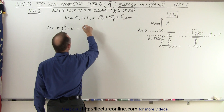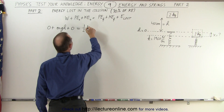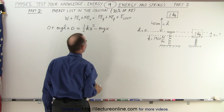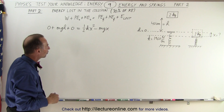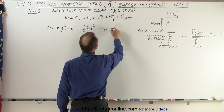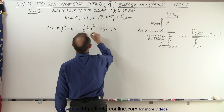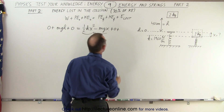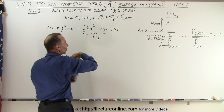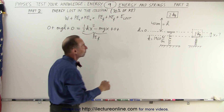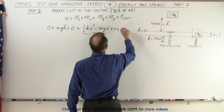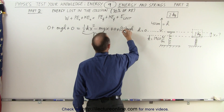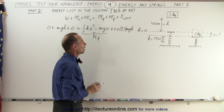The potential energy final would be one-half kx² minus Mgx, because it's below the reference height equal to zero. There's no kinetic energy, so plus zero. That is the potential energy final. And then we do have energy lost — 30% of the potential energy it initially had, which was converted to kinetic energy when it came down here, so it would be 0.3 MGH. That's the energy lost.